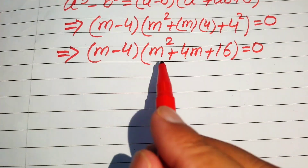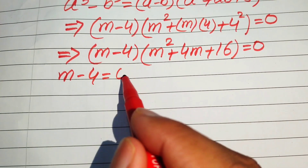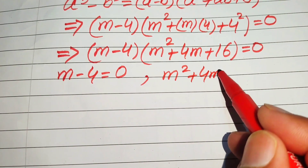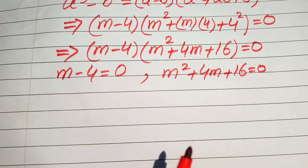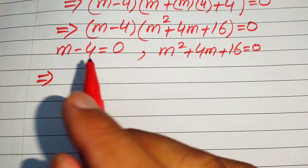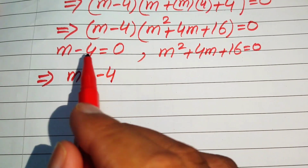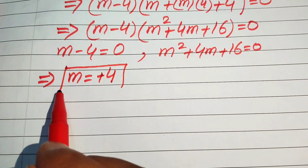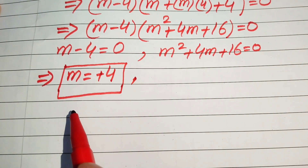We convert this equation into two cases. The first case is m minus 4 equals 0, and the second case is m squared plus 4m plus 16 equals 0. In the first case, m equals 4. This is a real root — the first real root of the given equation.